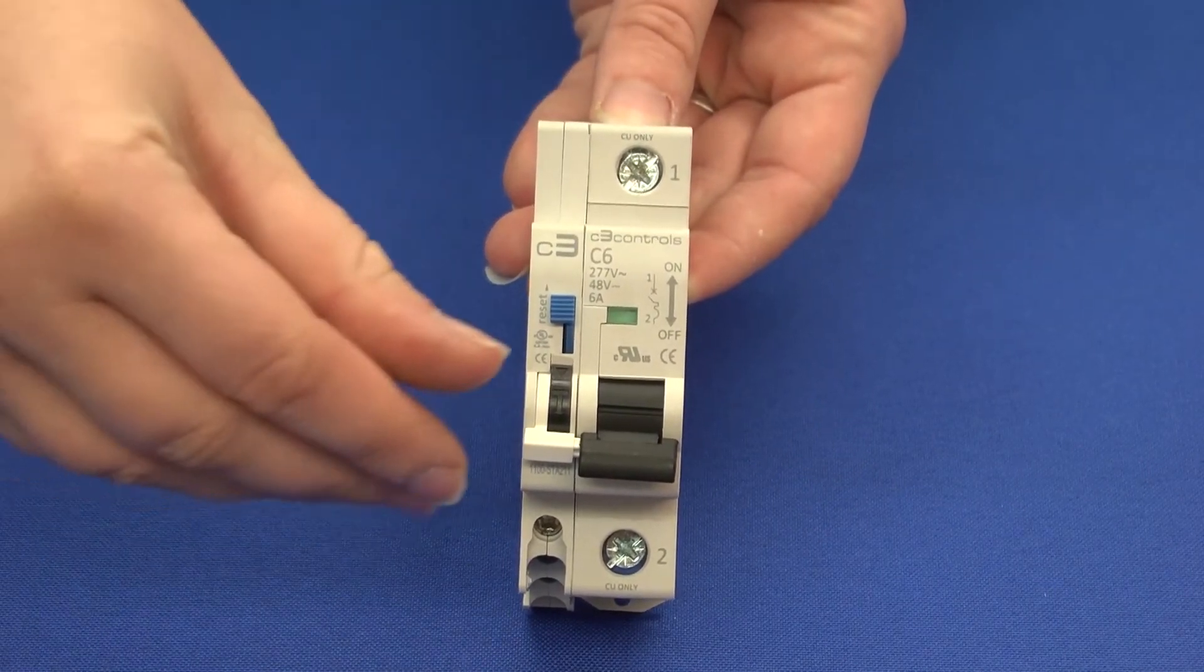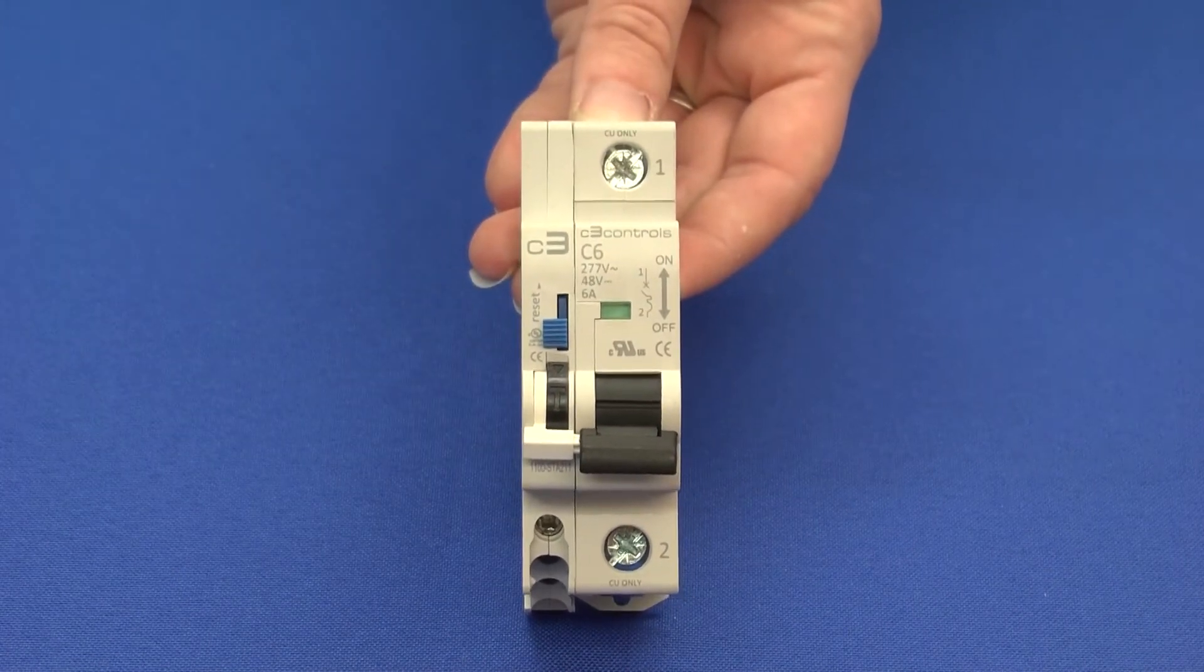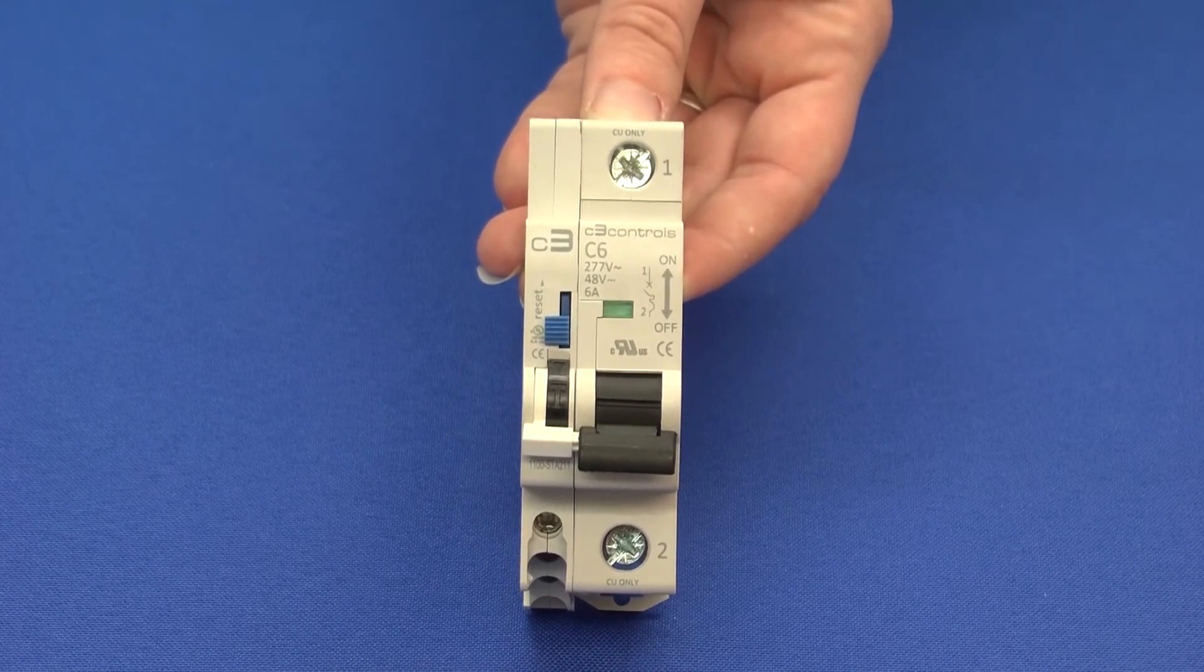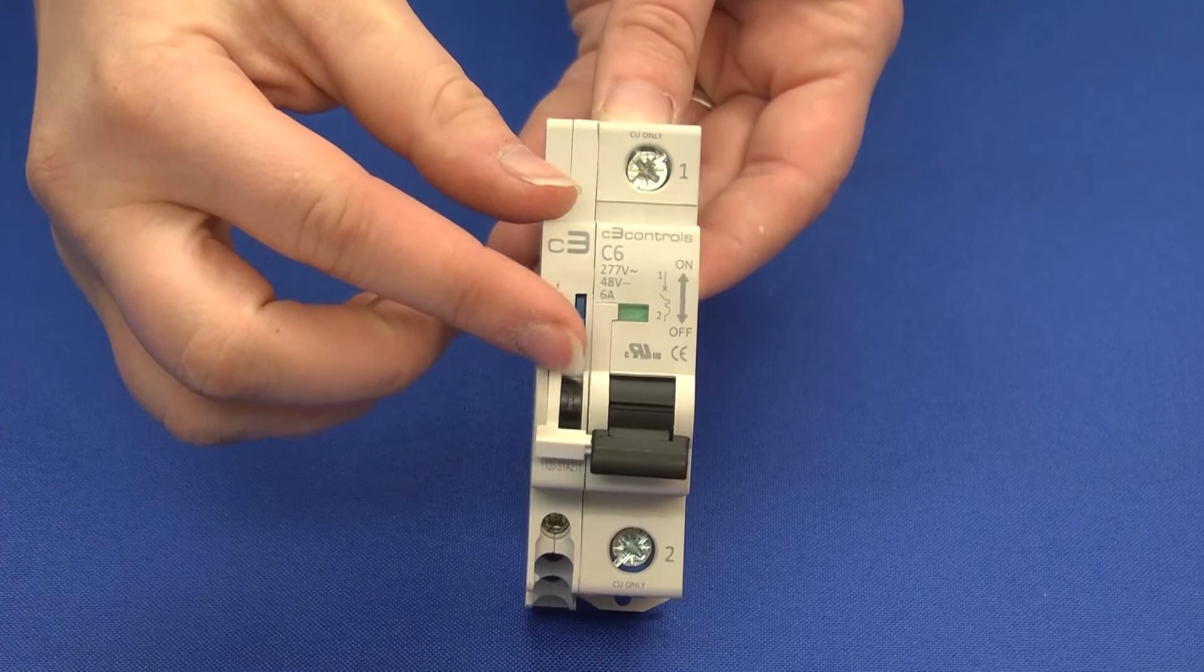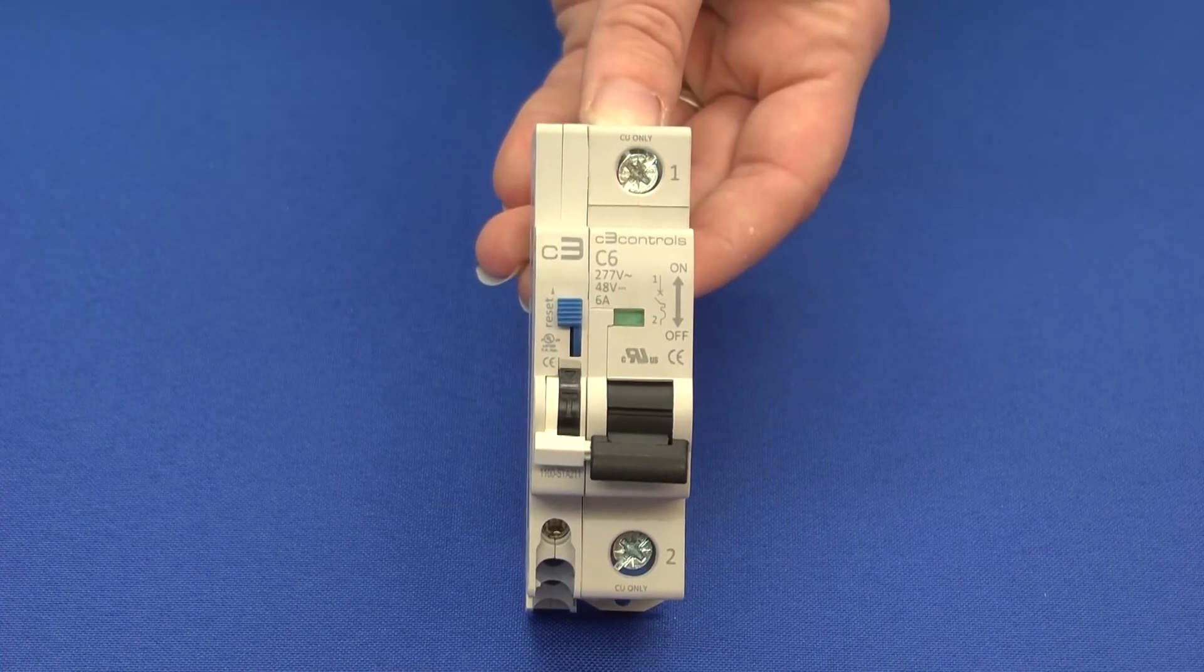Pull the test button down, and you can see that the reset button has tripped and is now in the down position, needing to be reset. Push up on the reset button, and now the circuit breaker is ready for regular operation.